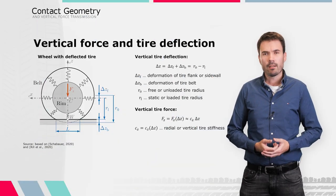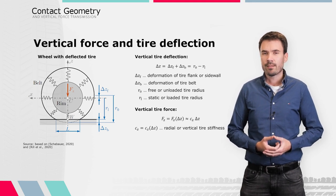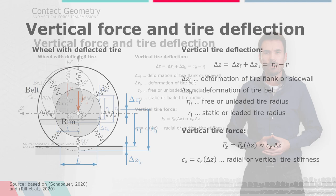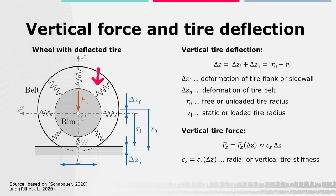When a tire is pressed to the ground by a certain wheel load FZ, it is deformed in vertical direction. Let's take a look at the simple substitute model shown on the left, where the tire belt is considered to be elastically attached to the rim. There you can see two deflections in radial direction of the loaded tire.